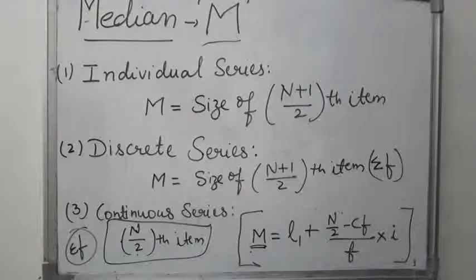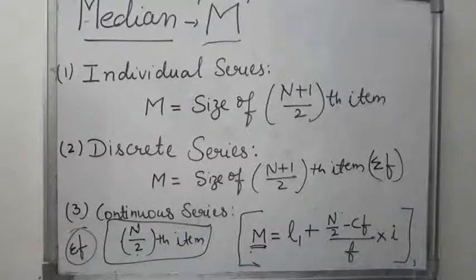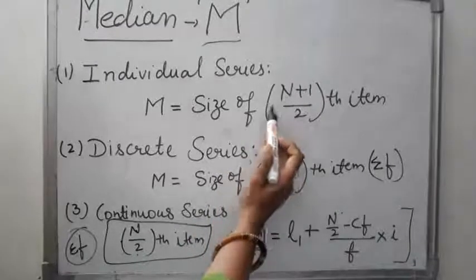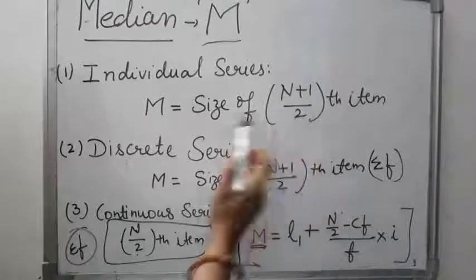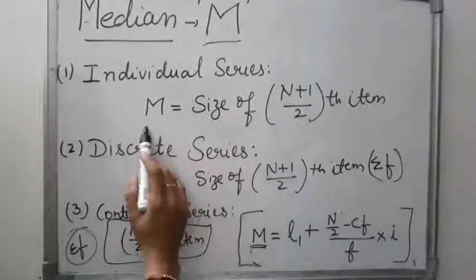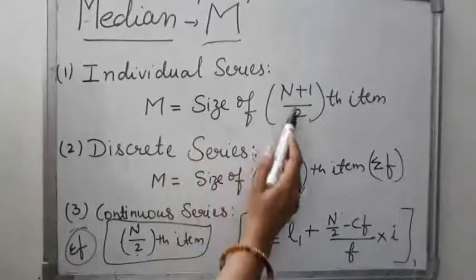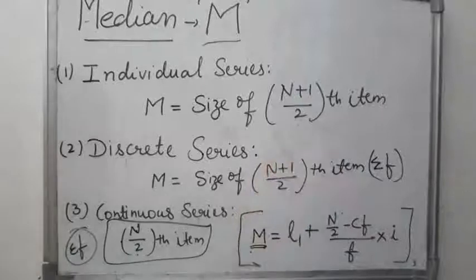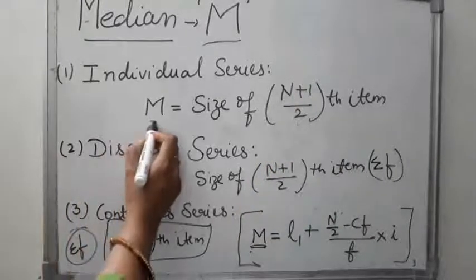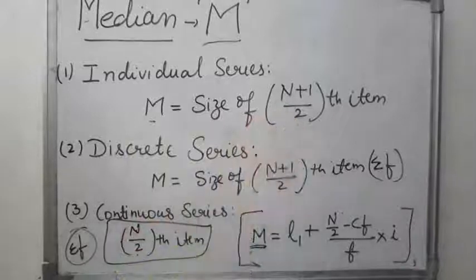We arrange the data in ascending or descending order, then add up the number of items indicated by capital N. The formula is: M equals size of (N + 1) / 2 th item. Here, N is the number of items in the series.